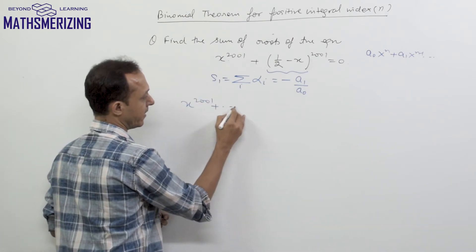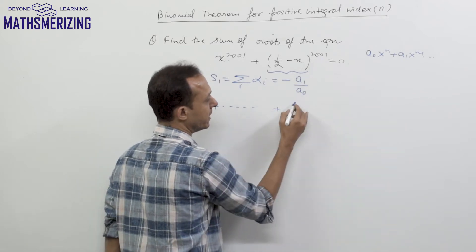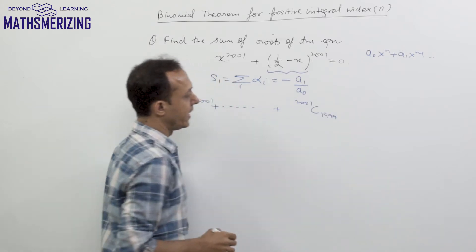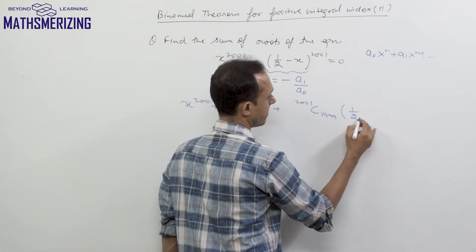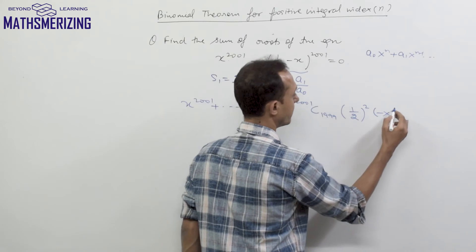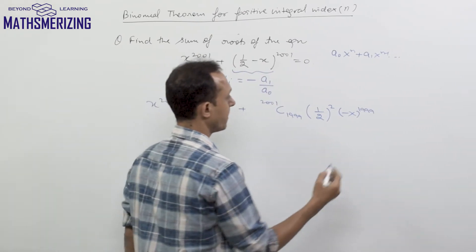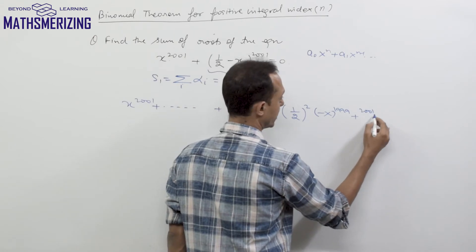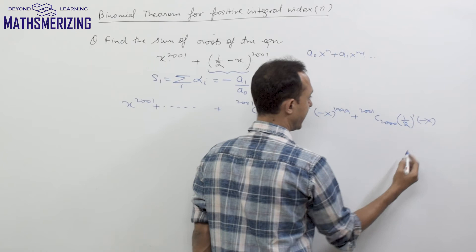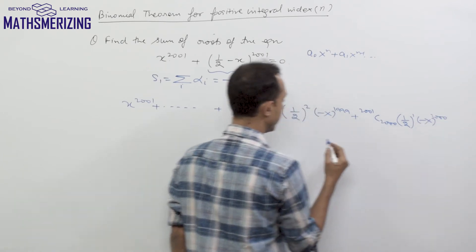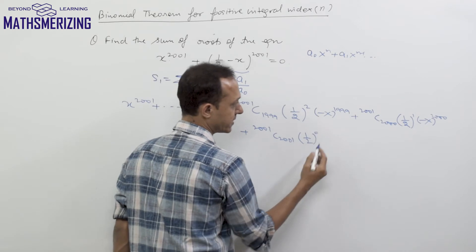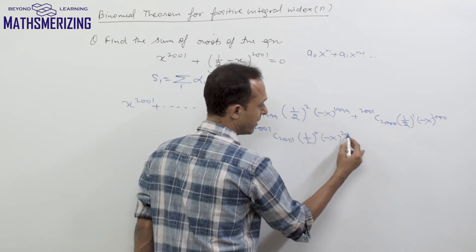The third last term will be 2001C1999 times (1/2) squared times minus x to the power 1999, then plus 2001C2000 times (1/2) to the power 1 times minus x to the power 2000, and then plus 2001C2001 times (1/2) to the power 0 times minus x to the power 2001.